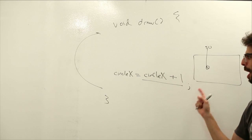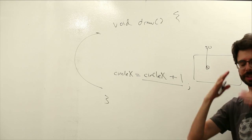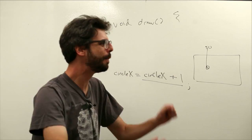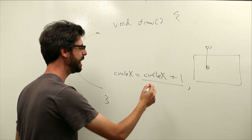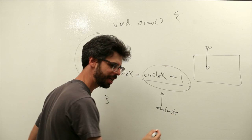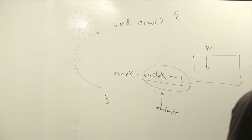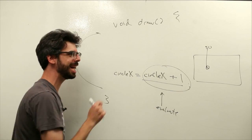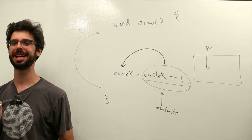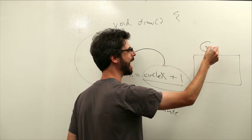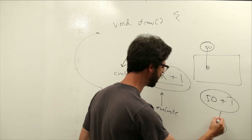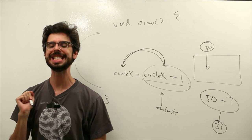This assignment operation might look a little strange — almost like some sort of weird paradox. Nothing can equal itself plus one, right? That doesn't make any sense. But we have to remember: what an assignment operation does is evaluate the right side of the equation, take the result, and store it in the left-hand side. So if circle x currently has the value of 50, we evaluate 50 plus 1, which becomes 51, and then that gets stored and circle x is now 51.